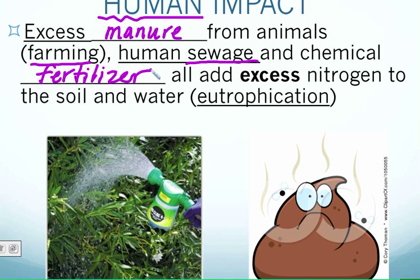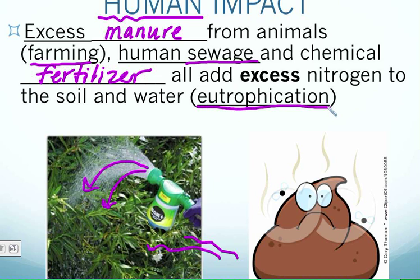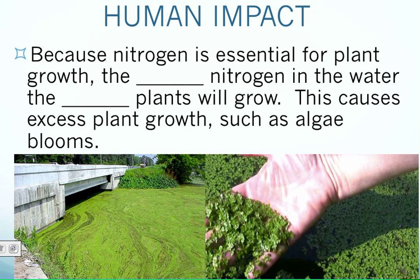Fertilizer is used to help plants grow, so it's a good thing — it does have a lot of nitrogen in it. But when we use too much fertilizer and not all of it is absorbed by the plant, some of that extra can filter off into the soil or water. We call that eutrophication — a big fancy science word for when an area has too much nitrogen, creating an excess in a soil or water environment.